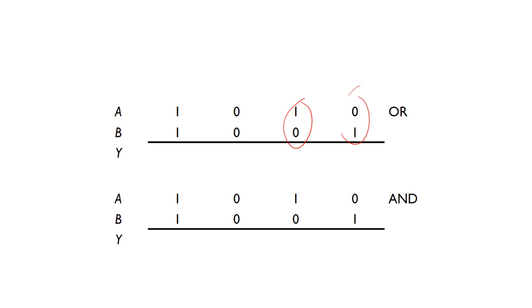Zero OR one is one, one OR zero is one, zero OR zero is zero, and one OR one is one. It's very easy.